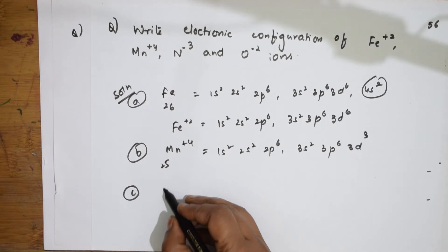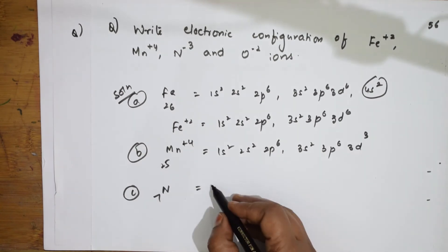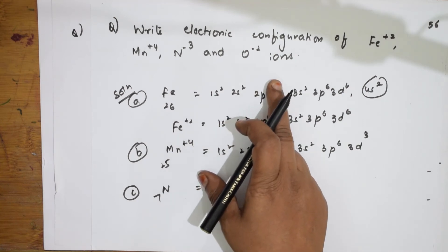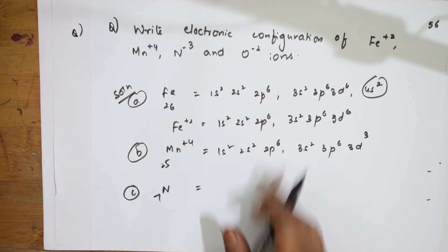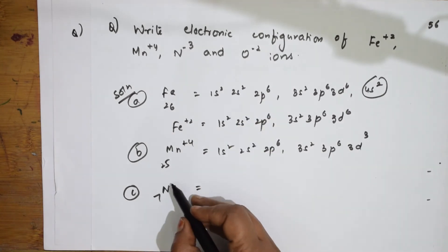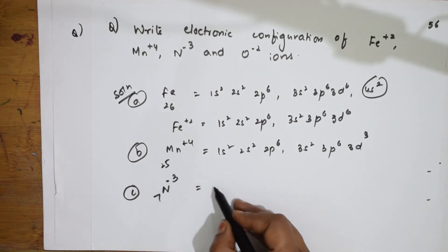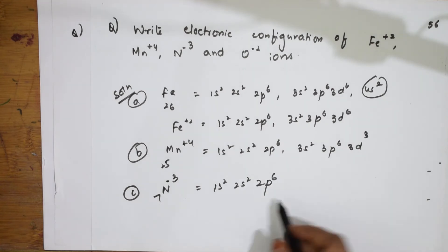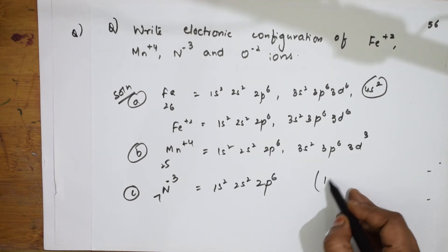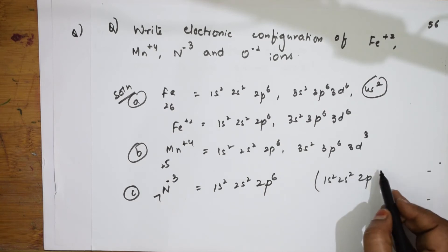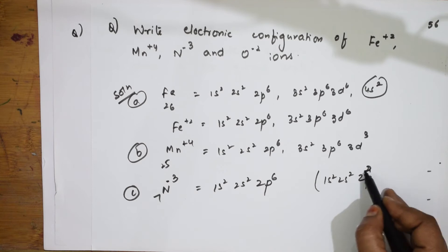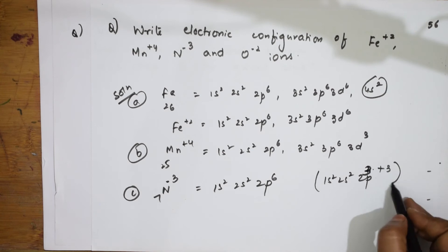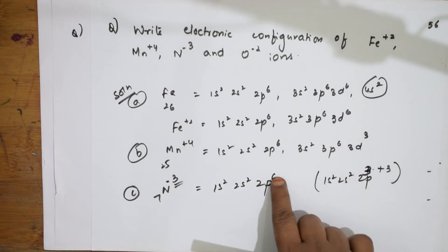For nitrogen N³⁻ (Z=7): original nitrogen configuration is 1s², 2s², 2p³. Since N³⁻ has 3 electrons added, 2p³ becomes 2p⁶ (3+3=6). So the configuration of N³⁻ is 1s², 2s², 2p⁶.